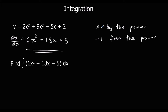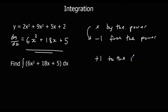So the process for differentiation: we times by the power, and then we take 1 off the power. We're going to do the opposite to integrate — so we're going to do the opposite of minusing 1 from the power, so we're going to add 1 to the power, and then the opposite of timesing is dividing. So for integration, we're going to add 1 to the power, and then we're going to divide by the new power.